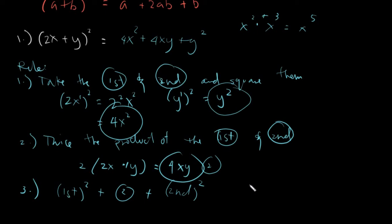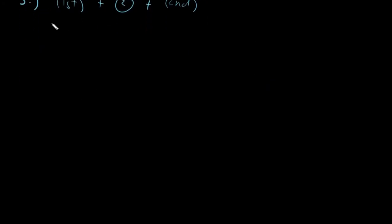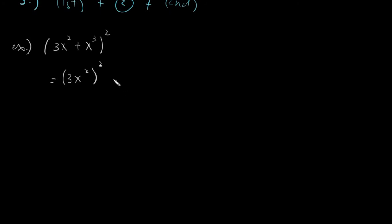You don't necessarily need to follow specific rules — you can come up with your own means of understanding the lesson. Let's have another example: say we have (3x² + x³) squared. What we need to do here is write it down in the structure: take the first term and get the square, plus twice the first term times the second term, plus the second term squared.